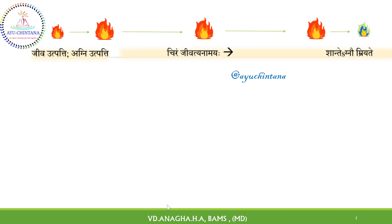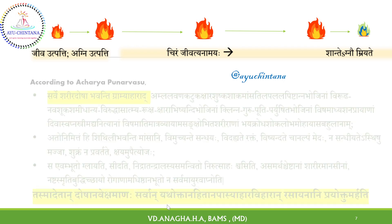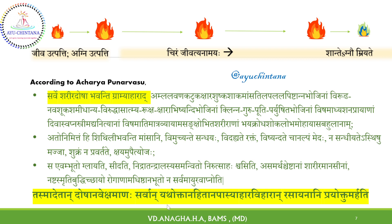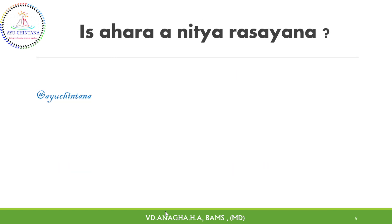For the sustenance of Agni, Ahara Rupi Indhana has to be served at every mealtime. Finally, with diminution of Agni, life comes to an end. Hence, Ahara is of prime importance for maintenance of optimum Agni. This is why exactly Acharya Charaka signifies Hita Ahara to be consumed just like Rasayana. Is Ahara a Nithya Rasayana?